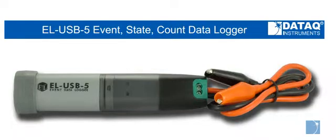The EOUSB-5 is a standalone event state and count data logger capable of logging the date and time that an event occurred, the number of events, and state changes. The EOUSB-5 accepts signals up to 24 volts.